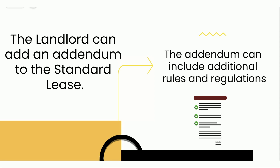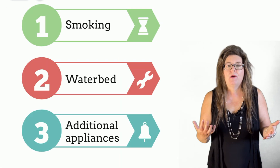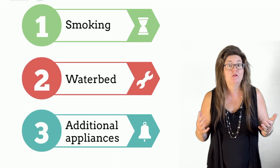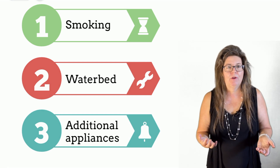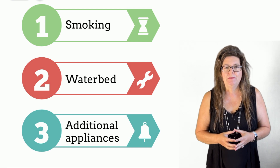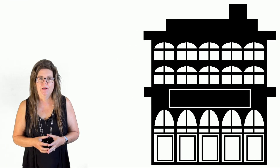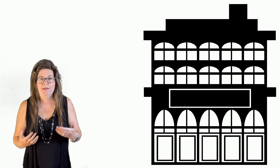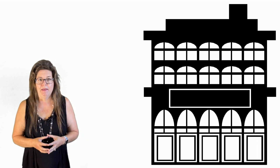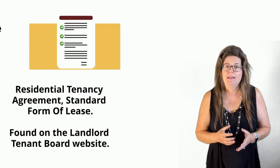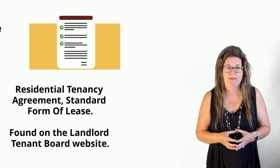A landlord can add an addendum to the standard form of lease to capture other components required, such as window coverings, appliances, water vans, how to obtain maintenance, etc., as well as any building rules that may be applicable. This is where the landlord would include information about condominium rules if the rental is in a registered condominium. A copy of the standard form of lease can be obtained on the Ontario Landlord Tenant Board site or the Ministry of Housing's website.